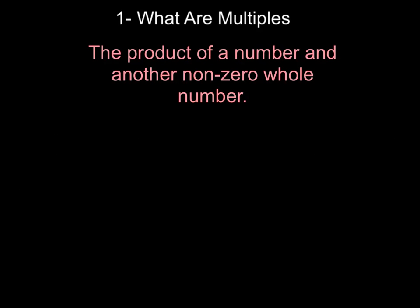Let's first start at defining multiples. Multiple is the product of a number and another non-zero whole number. Now remember, a product is the result of a multiplication problem. Since it's a result of two numbers being multiplied, the product itself is what the multiple is.